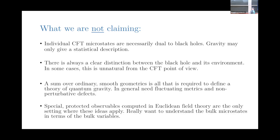A sum over smooth geometries probably should be part of the answer, but it might not be complete. I'm also not claiming that these special protected supersymmetric observables computed in Euclidean field theory via analytic continuation are the only things we should compare between CFT and gravity. They're just the ones where we really know how to do a detailed check on the field theory side. But we should be trying to learn more general lessons and extend the regime of what we're willing to talk about. We want to understand the bulk microstates in terms of bulk variables ultimately.